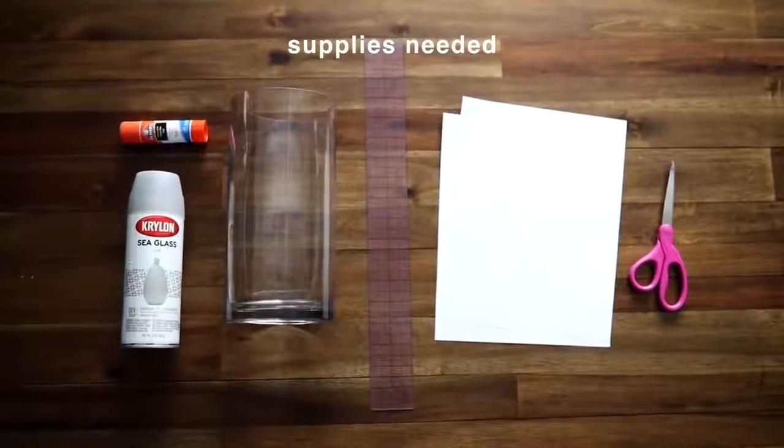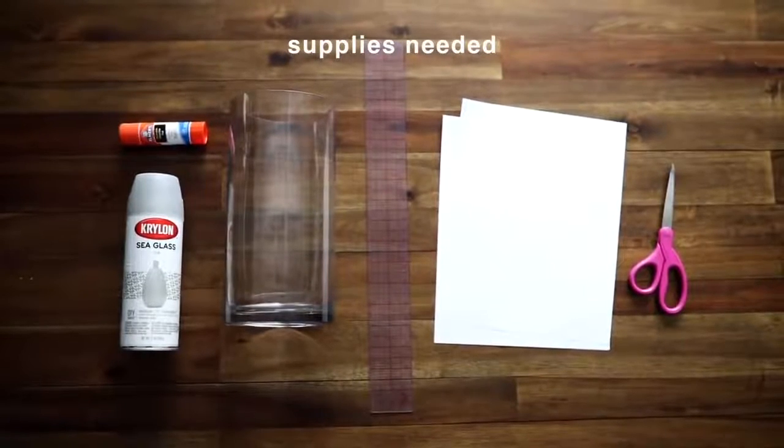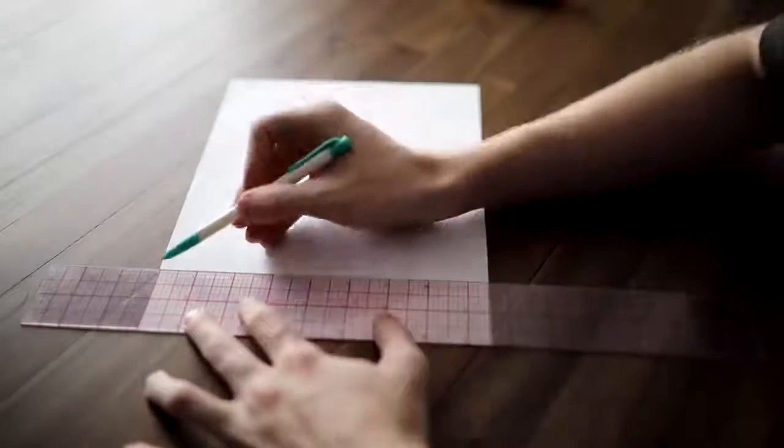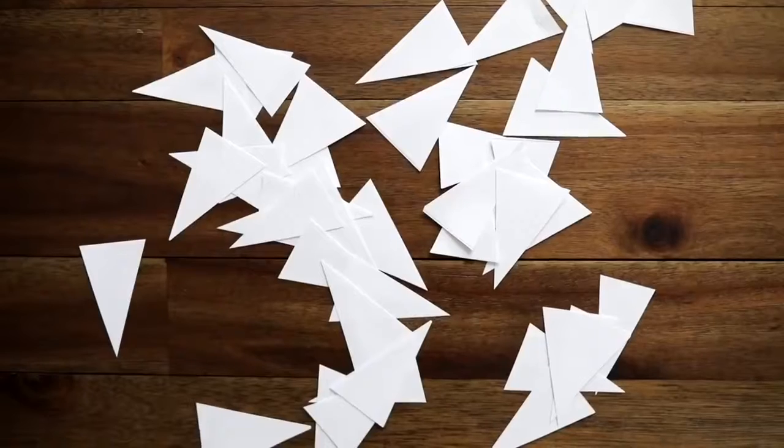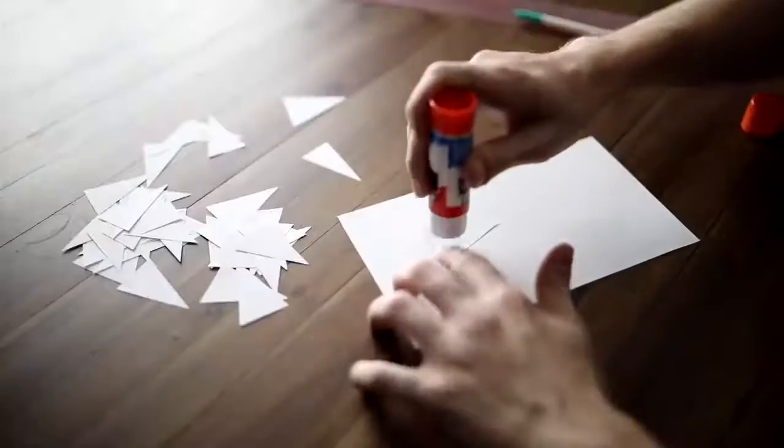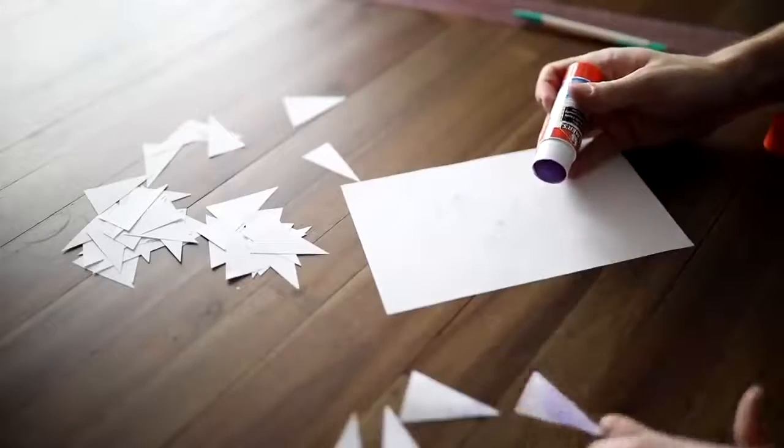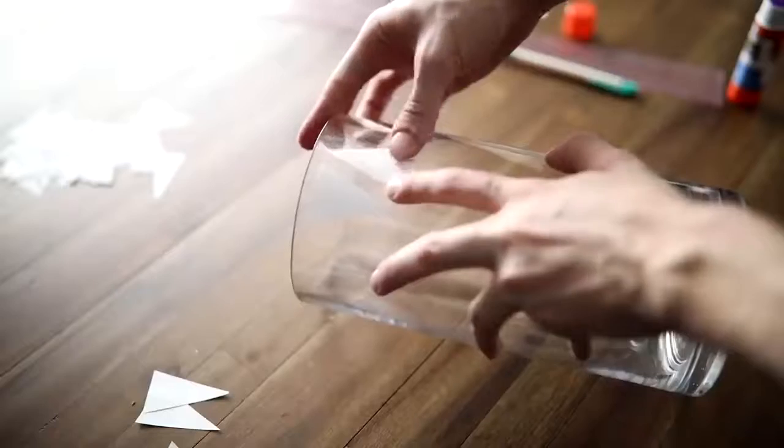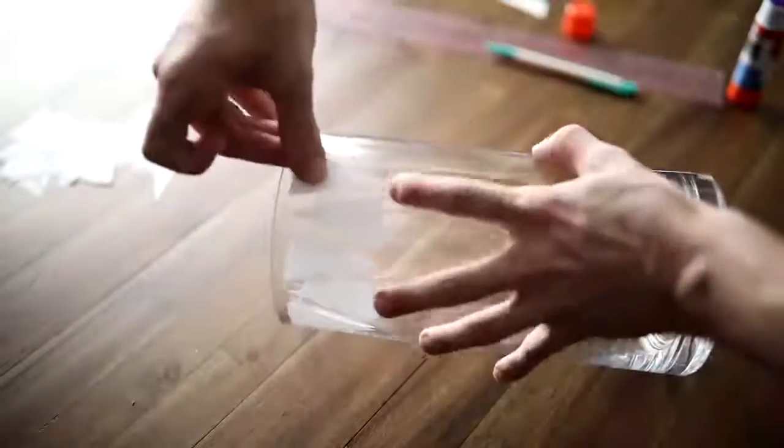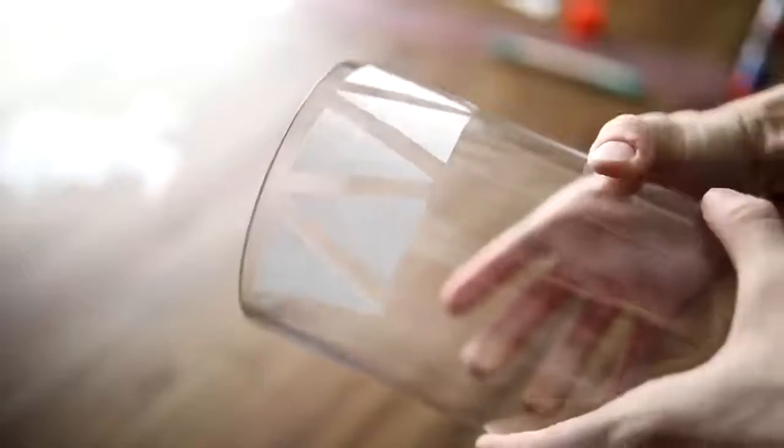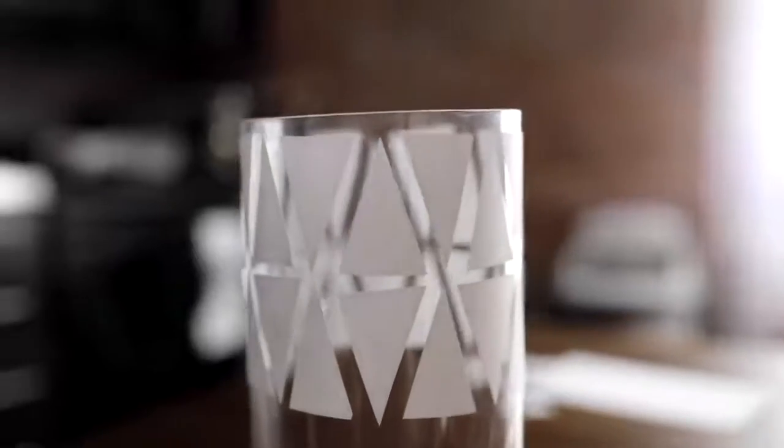DIY number two - all you're going to need is some sea glass spray paint, a glue stick, a vase, ruler, paper, and scissors. I absolutely love the look of this frosted glass vase - it looks so expensive and very West Elm-esque. I cut out two-inch strips from paper and cut out some triangle masks. You can cut out any shape you'd like out of regular old printer paper and apply a bit of Elmer's glue stick to the back. Let the glue stick dry because once it dries it turns into a slightly tacky but removable masking piece, kind of like a Post-it note.